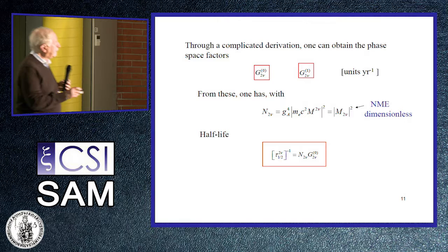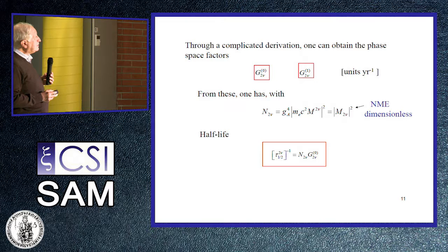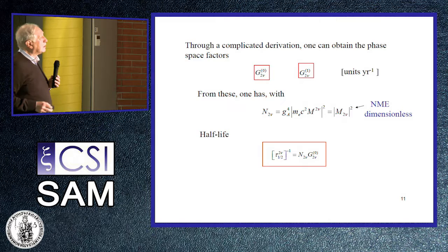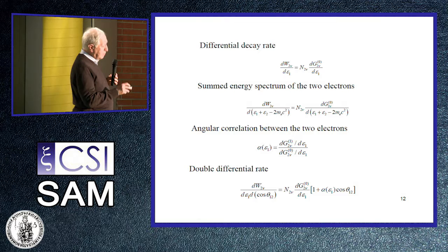One can then obtain the phase-space factors G0 and G1 in units of inverse years. From this, one can calculate the quantity nu, which is the product of GA to the fourth, an appropriate scale factor, the nuclear matrix element squared, combined with the half-life by multiplying by the phase-space factors we have calculated. All other quantities — the differential decay rate, the energy spectrum of the two electrons, the angular correlations, and the double differential rate — can also be calculated.